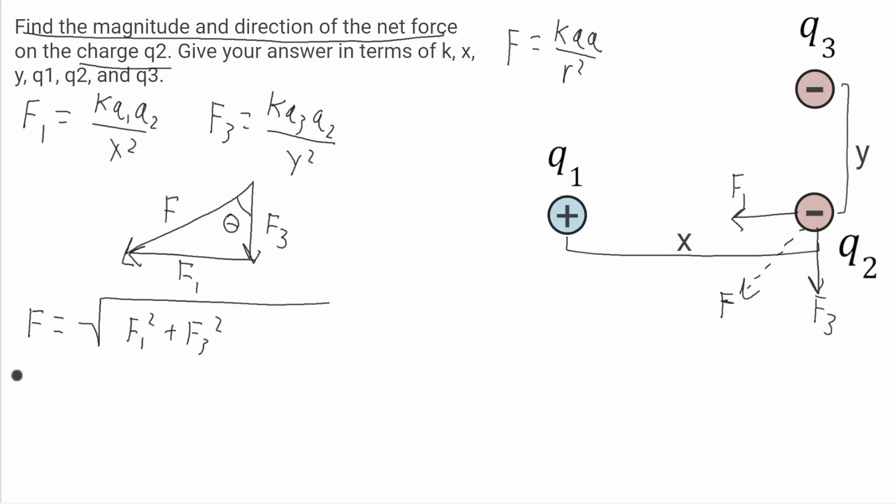Now, I have to write this all out. I've got F is equal to the square root of kq1q2 over x squared, this will all be squared, and it'll be plus kq3 times q2 over y squared. And this will also all be squared.